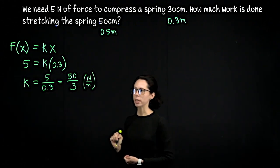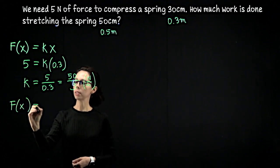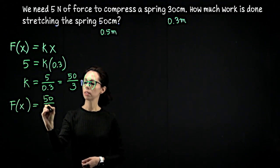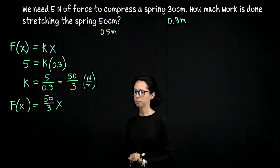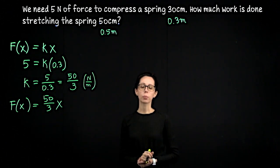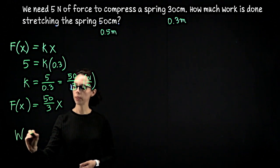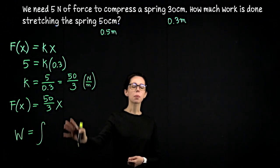For this particular spring, the force we need to displace it by x meters is 50 thirds times the number of meters. This is a varying force, so in order to compute the work done, we're going to set up an integral. The work done moving the spring...